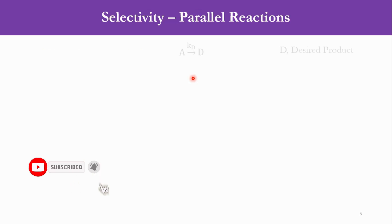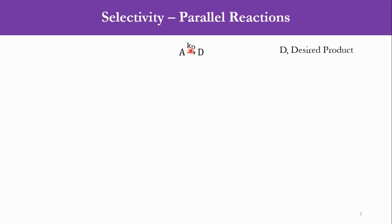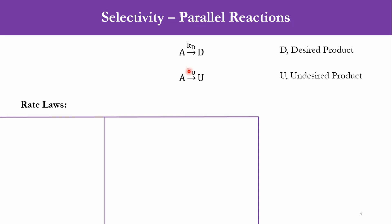So let us assume two parallel reactions. The reactant A goes to D, and D is our desired product. The rate constant for this reaction is represented by K_D. Then there is a second reaction for the undesired product, and the rate constant is represented by K_U. Applying the rate law for R_D and R_U — the rate of formation of D and rate of formation of U — R_D will be K_D into C_A raised to the power alpha 1.